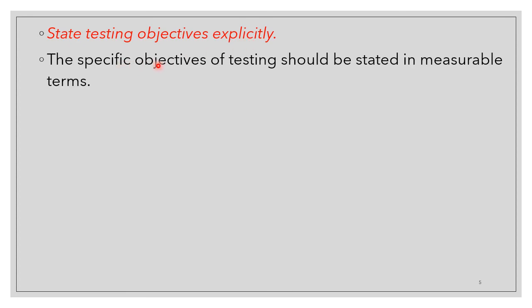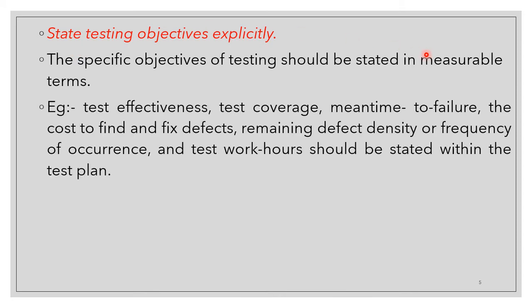State testing objectives explicitly. The specific objectives of testing should be stated in a quantifiable, measurable term. Examples include test effectiveness, test coverage, mean time to failure, the cost to find and fix defects, remaining defect density, frequency of occurrence of errors, and test work hours.